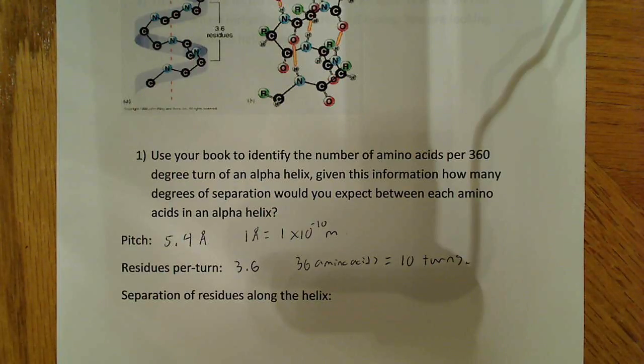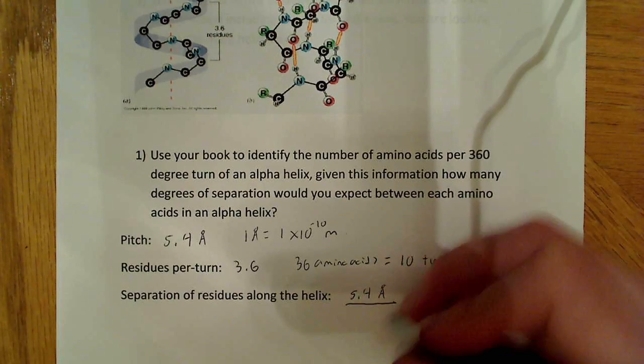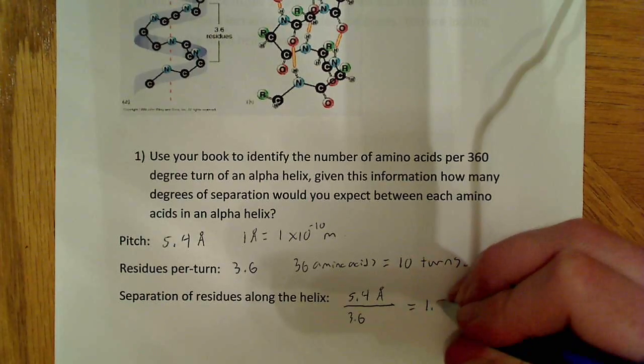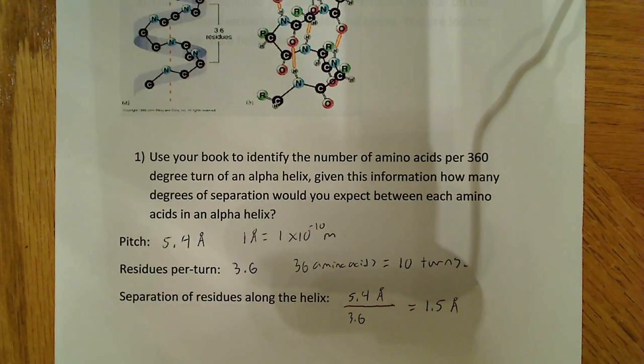Now, in order to find the separation between each amino acid, what you want to do is, you want to take the pitch, which is 5.4 angstroms. And, you want to divide that by the number of residues per turn, which is 3.6. And, when you do this, what you'll find is that there's 1.5 angstroms. So, 1.5 angstroms of separation per turn, or separation between residues, rather.